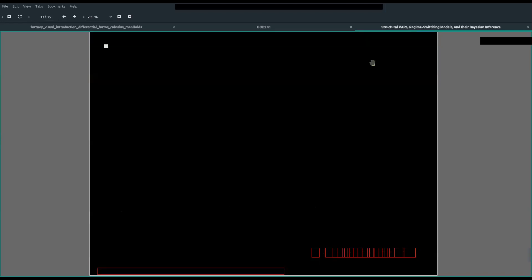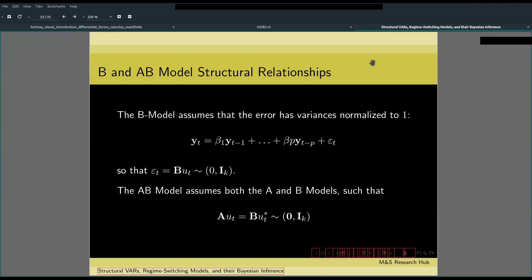The B model relation assumes that the error has variances normalized to one, so that the error is distributed with zero expected value and variance at one.